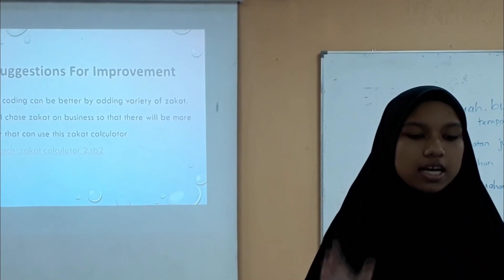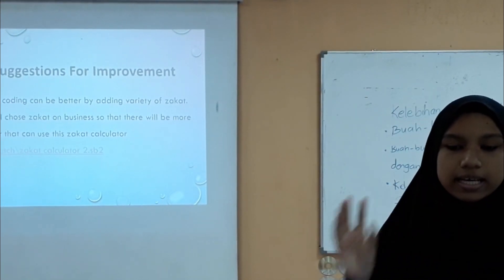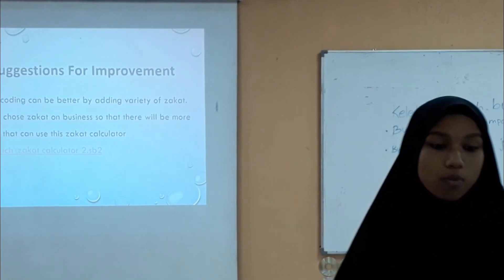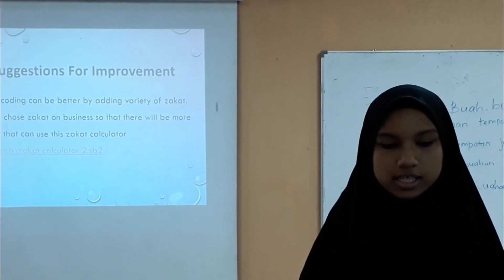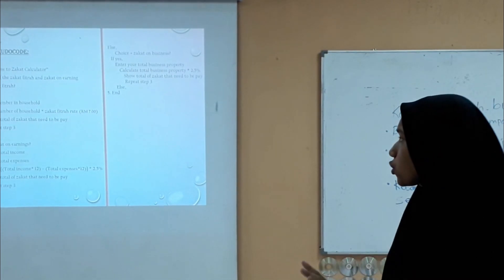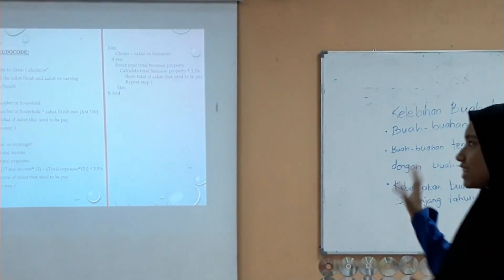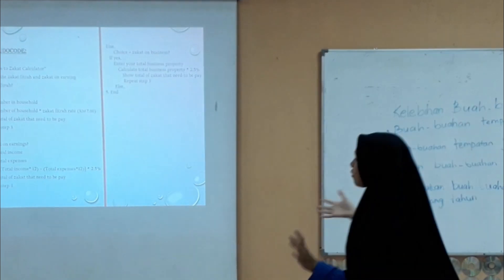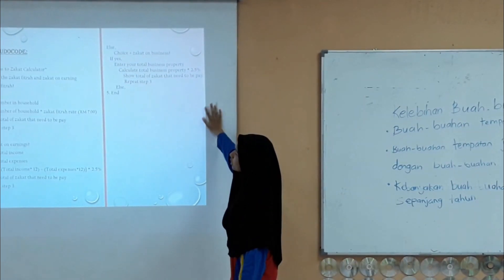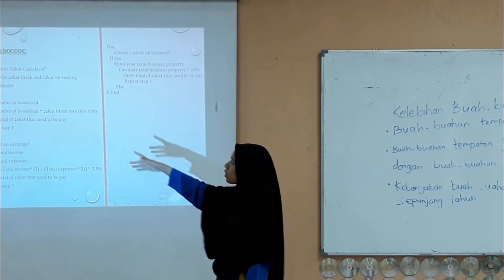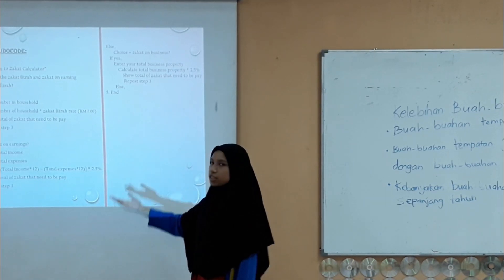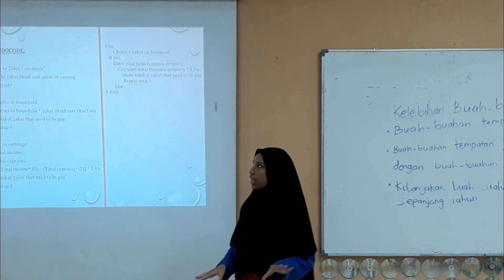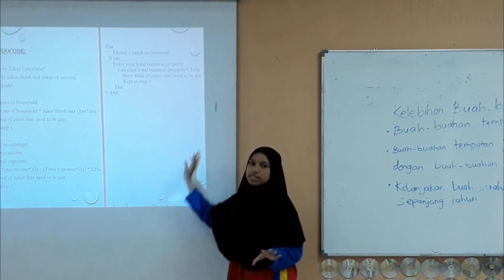My suggestion for improvement: this program can be better by adding a variety of zakat types. I suggest adding zakat on business so that more users can use the zakat calculator. Here are the basic code changes I made. At step 3, it goes to zakat fitrah. If the user says no, it moves to zakat on earning. If the user says no again, it will go to zakat on business.